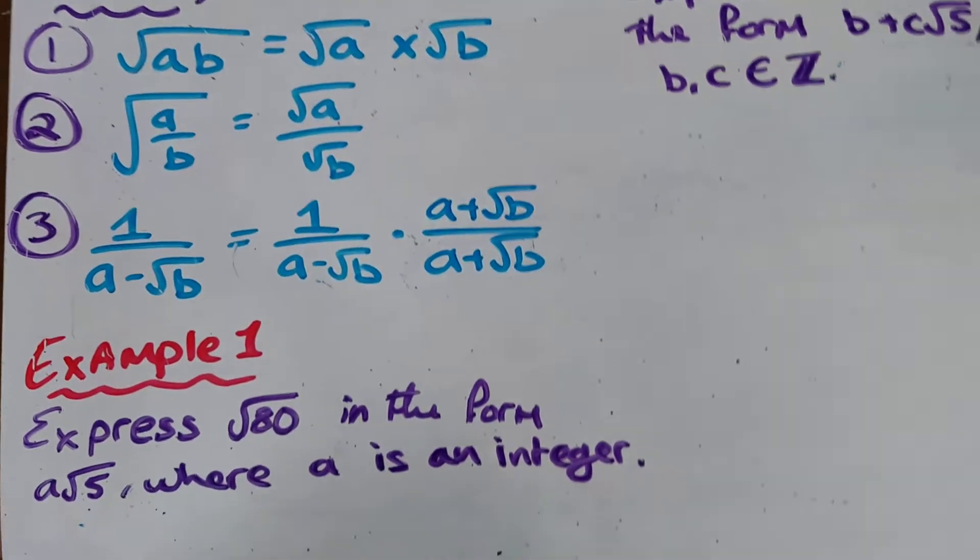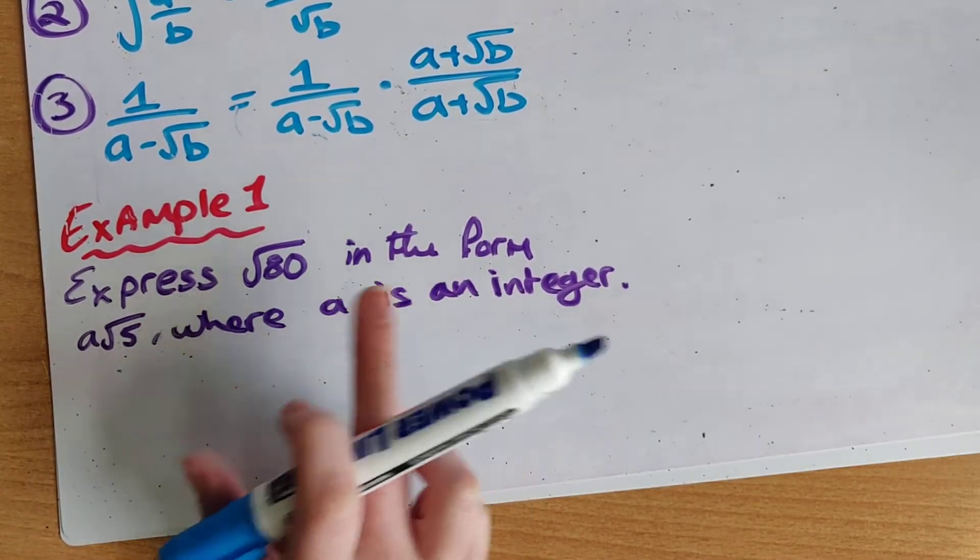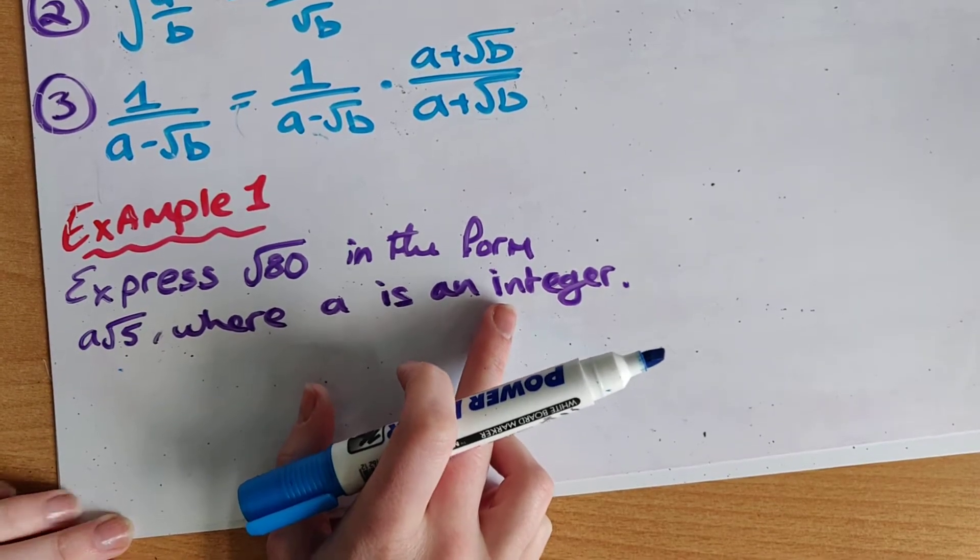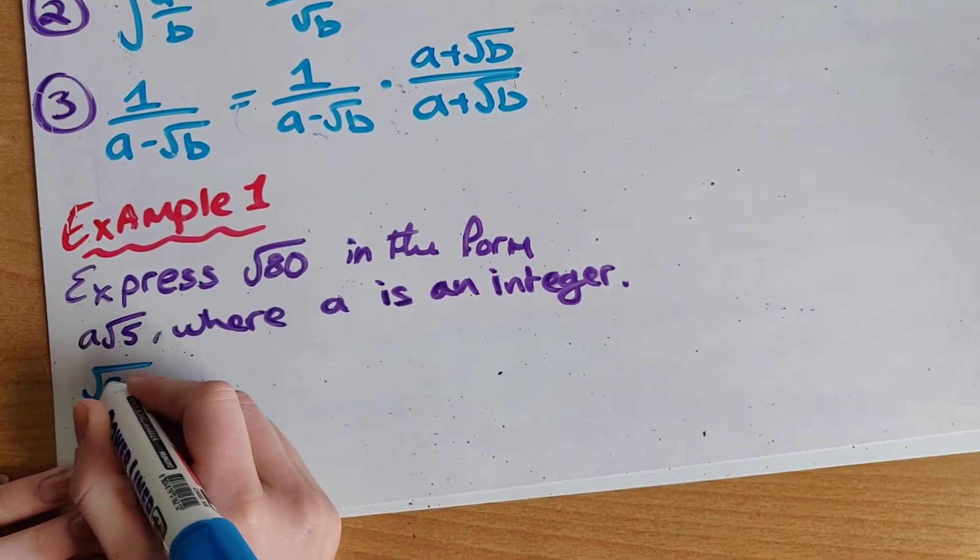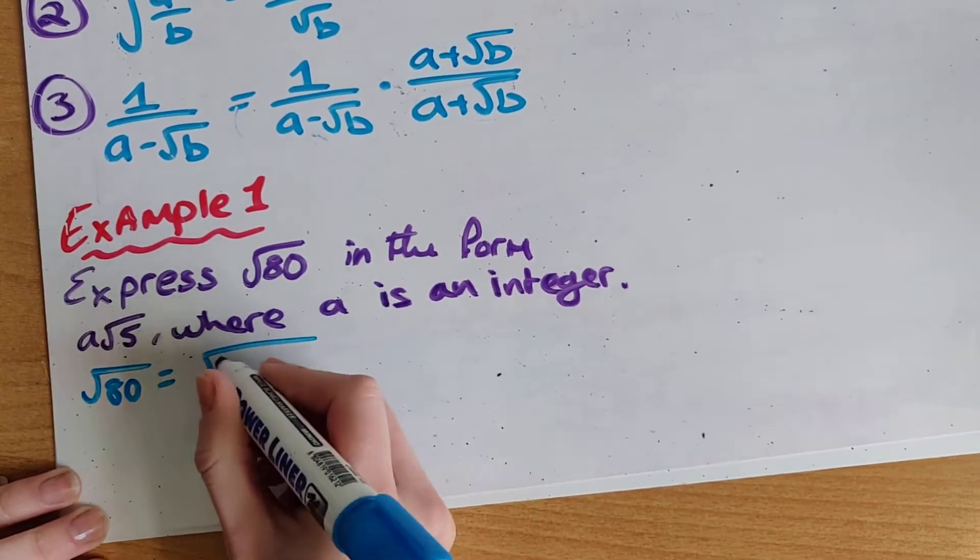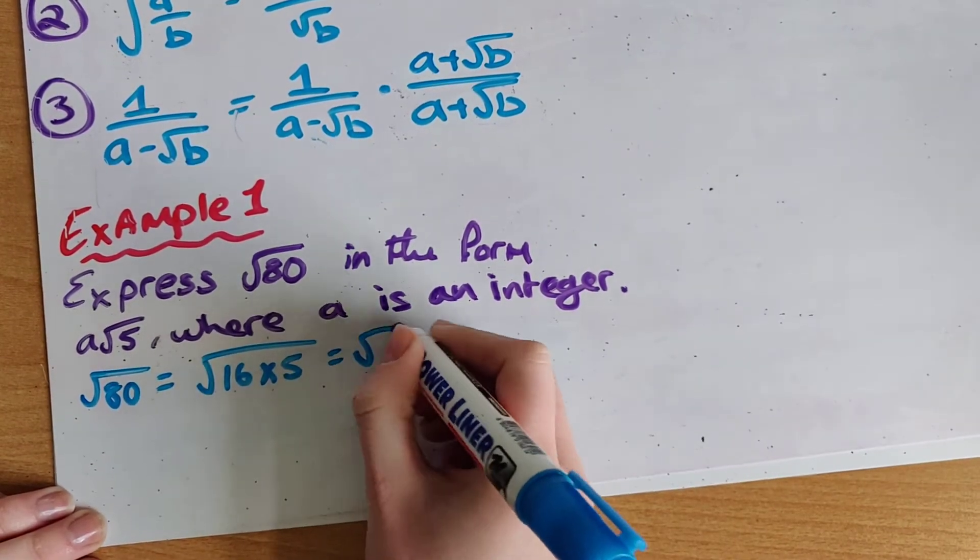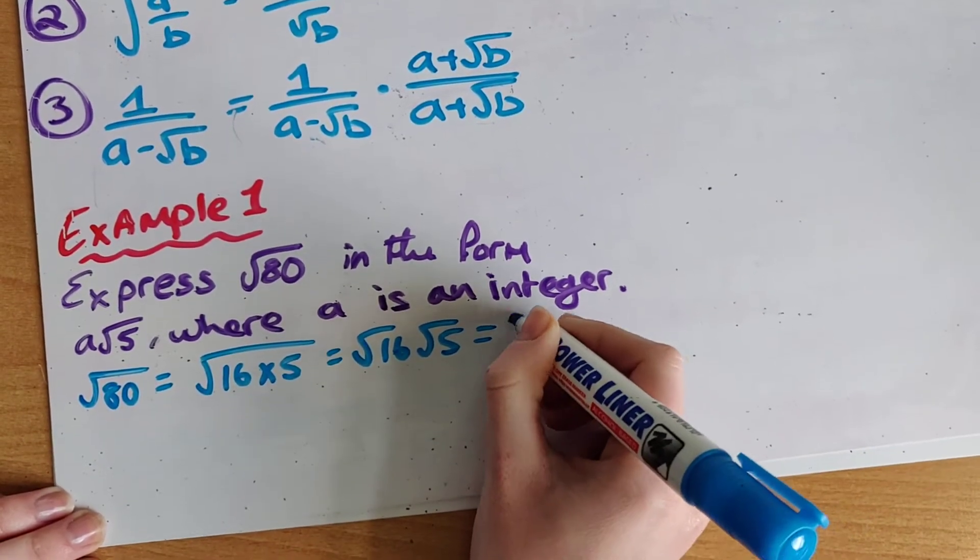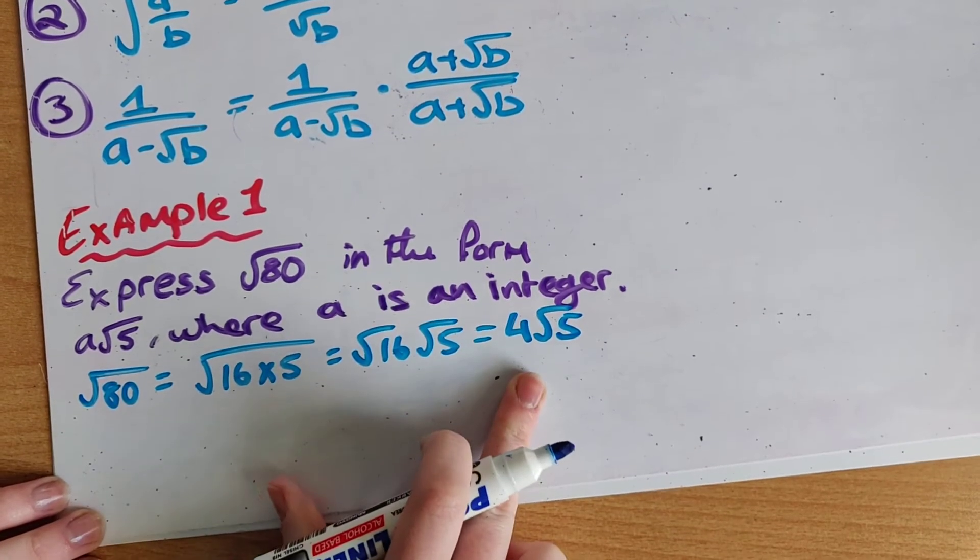So if we look here at example one, it says express root 80 in the form of a root 5 where a is an integer. And we remember that an integer is a positive or negative whole number. So if I'm doing this I'm going to look at root 80 and think how many fives go into 80. Well there's 16 fives in 80 so we have 16 times 5 which means I really have root 16 by root 5. So root 16 gives me 4 times root 5 so root 80 is really 4 root 5.